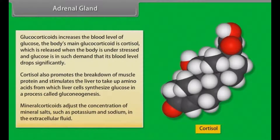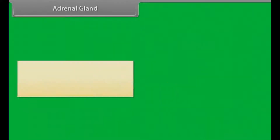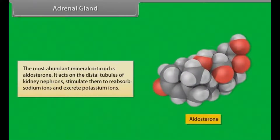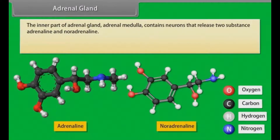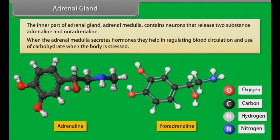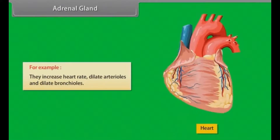Mineralocorticoids adjust the concentration of mineral salts such as potassium and sodium in the extracellular fluid. The most abundant mineralocorticoid is aldosterone, which acts on the distal tubules of kidney nephrons, stimulating them to reabsorb sodium ions and excrete potassium ions. The adrenal medulla contains neurons that release adrenaline and noradrenaline, which help regulate blood circulation and carbohydrate use when the body is stressed — for example, by increasing heart rate, dilating arterioles, and dilating bronchioles.